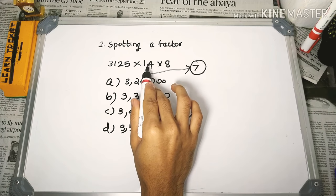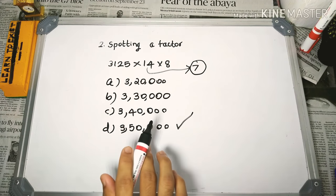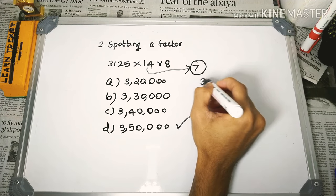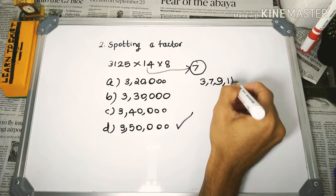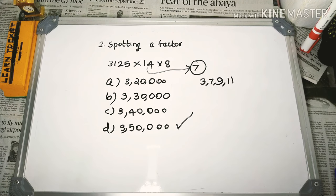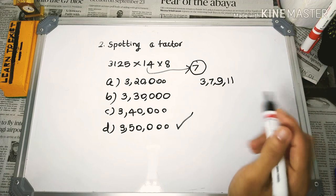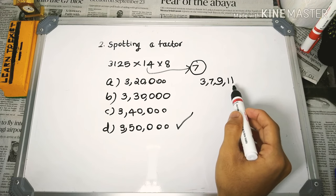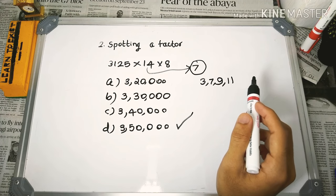If you have 3 prime numbers in the factors, you have 4 answer options and choose based on which option satisfies all prime factor conditions. Prime numbers like 3, 7, 9, 11 help narrow down the answer choice.